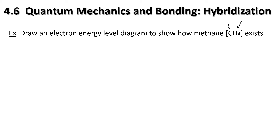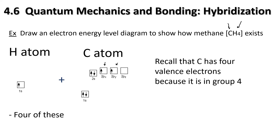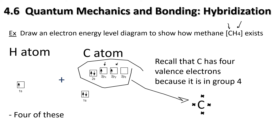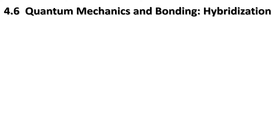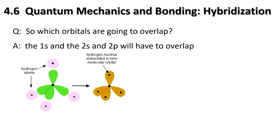Here's our hydrogen in its diagram, and there are four of them in CH₄. Here is our carbon atom: it has a full 1s, a full 2s, and then two electrons in 2px and 2py. But there's a problem - carbon has four valence electrons because it's in group four. We only have two singular electrons here, not the four we're used to. So the 1s, 2s, and 2p orbitals will all need to overlap.